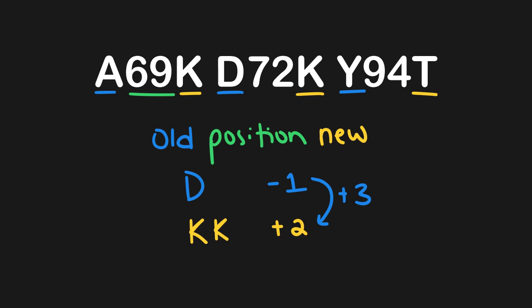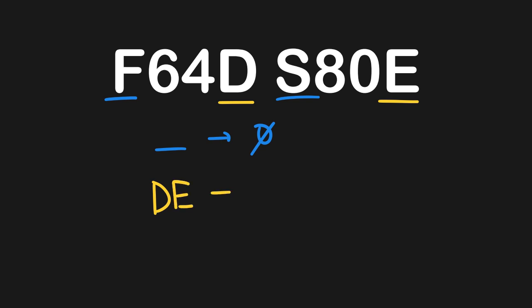Let's look at another example. For the old sequence, we have F and S — we skip both, so there's a placeholder with a net charge of zero. For the new sequence, both mutations are DIRK amino acids: we include D and E. There are no cancellations, so that's minus two. The difference between zero and minus two is a minus two change — that's the net change in the peptide sequence for these mutations.